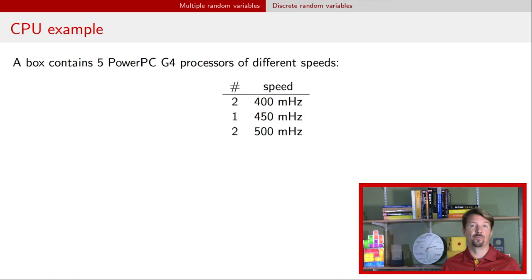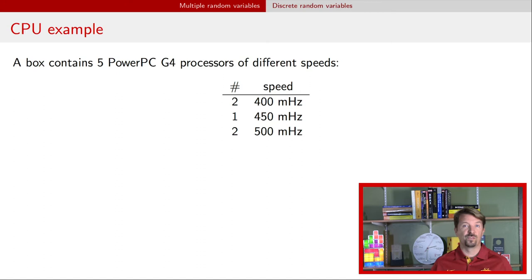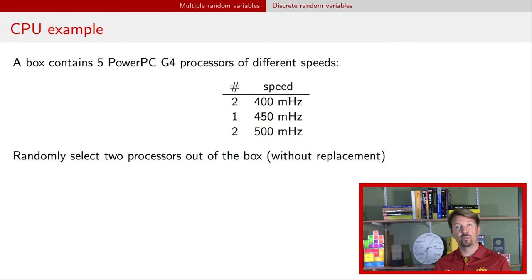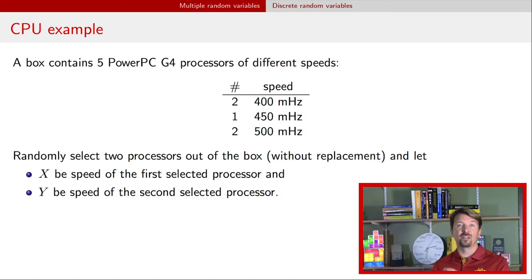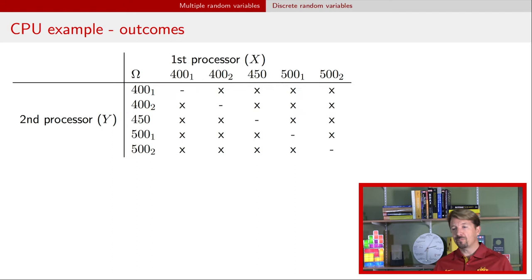Here's an example we'll use throughout the video today. Imagine a box that only has five CPUs in it, with three different speeds: two of them are 400 megahertz, one is 450, and two are 500 megahertz. You're going to select two out of the box without replacement — that means you don't put the first one back before you select the second one. We define x as the speed of the first one randomly pulled out, and y as the speed of the second one randomly pulled out.